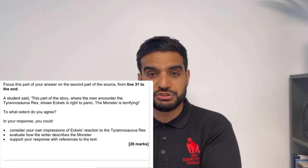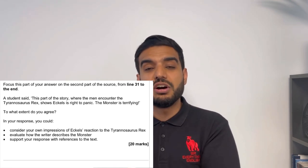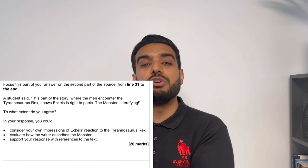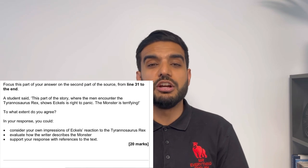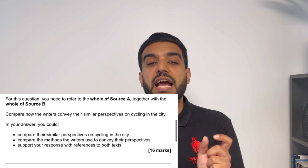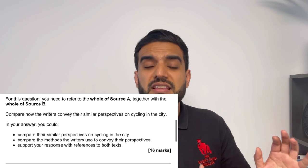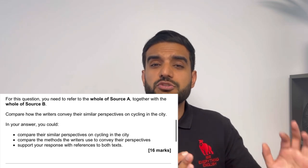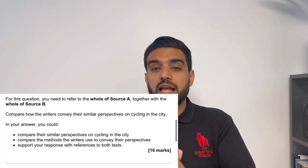Paper One Question Four is a 20-mark question — we spend 20 minutes. It always has a statement and asks you to what extent do you agree; you write four paragraphs explaining how you strongly agree. Paper Two Question Four is a 16-mark question where you compare writers' methods — either structural devices or language devices. That completes Section A for both papers.